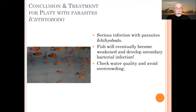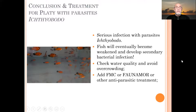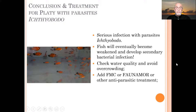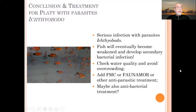First of all, check your water quality and avoid overcrowding, because those are the main reasons why these fish get this infection. Try to treat with formalin malachite green or the FMC, which I describe in my books, or use the Faunomor treatment from Aquarium Münster or other antiparasitic treatments. You may also need to apply an antibacterial treatment — an antibiotic or a drug like Viromor — to control secondary bacterial outbreaks.